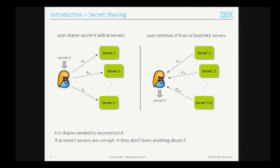We can secret-share the decryption key over N servers. Secret sharing works by providing N shares such that if you later retrieve at least T+1 of those shares, you can securely reconstruct the key. T+1 is the lower bound — if an adversary has at most T shares, they cannot learn anything about the shared key. This looks like a good solution since we no longer have to rely on a trusted hardware device.